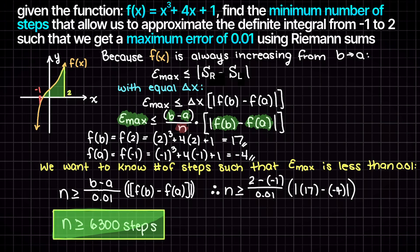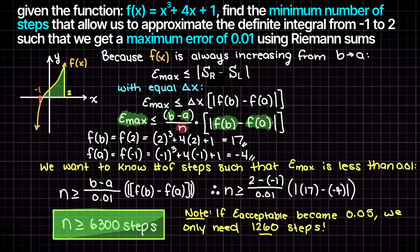If we assume a slightly less accurate goal of say 0.05, the number of steps required reduces greatly to 1260 steps. This just further validates the trade-off between accuracy of a solution and the amount of work required to achieve that solution.